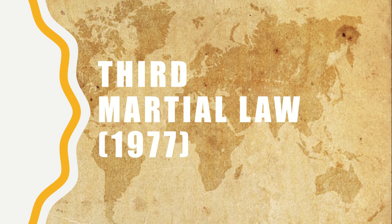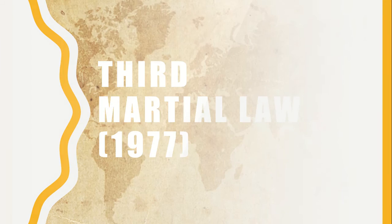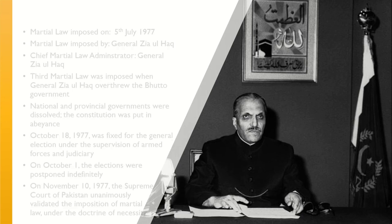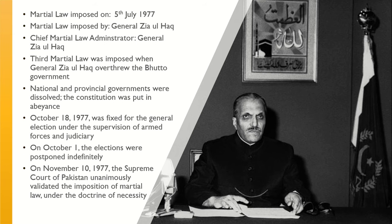3rd Martial Law 1977. Martial Law was imposed on 5th July 1977. Martial Law was imposed by General Ziaul Haq. Chief Martial Law Administrator was General Ziaul Haq. 3rd Martial Law was imposed when General Ziaul Haq overthrew the Bhutto government. National and provincial governments were dissolved and the constitution was put into abeyance.